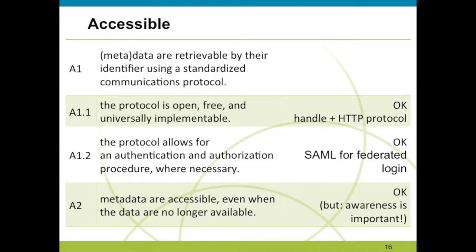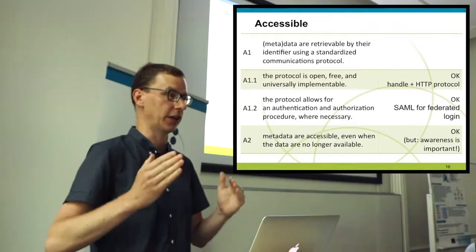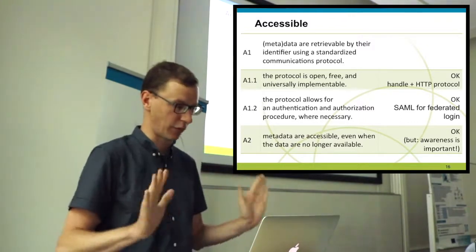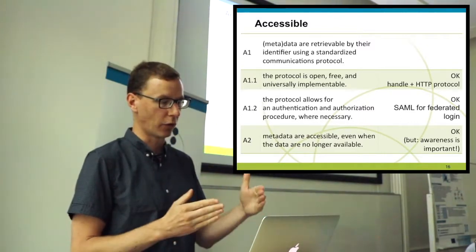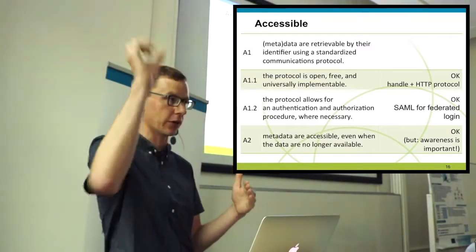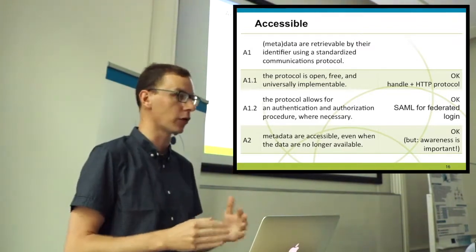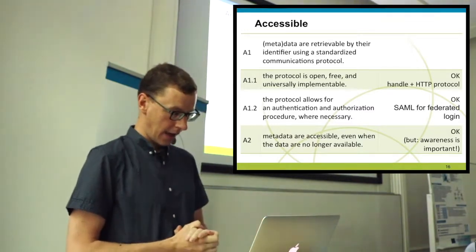That brings us to the Accessible part of FAIR. The accessible requirement states that metadata are retrievable by their identifier using a standardized communications protocol, split up in three sub-requirements. The protocol for getting access needs to be open, free, and universally implementable. We're in line with that — for access to resources we use the HTTP protocol, and for resolving access we base on the Handle protocol.